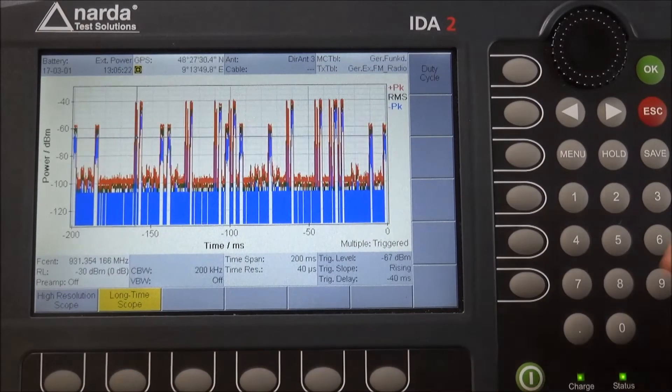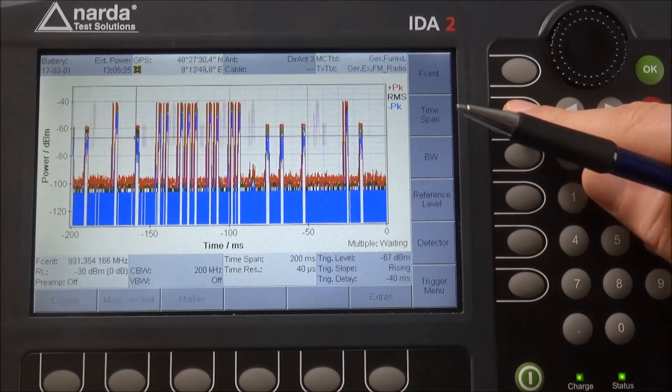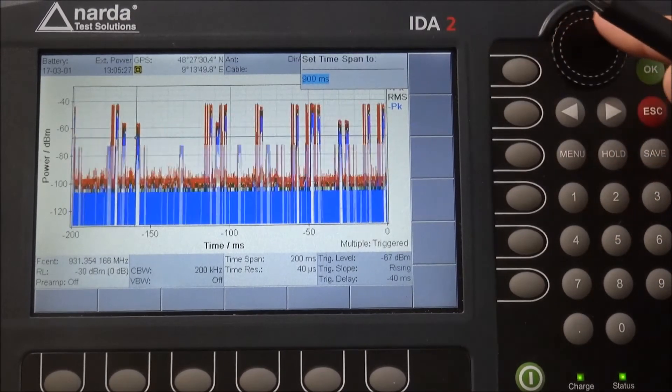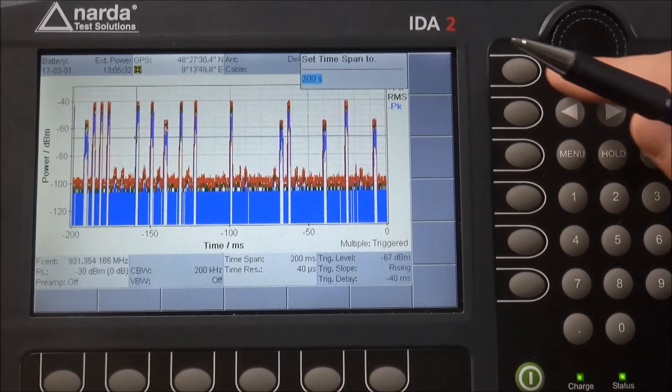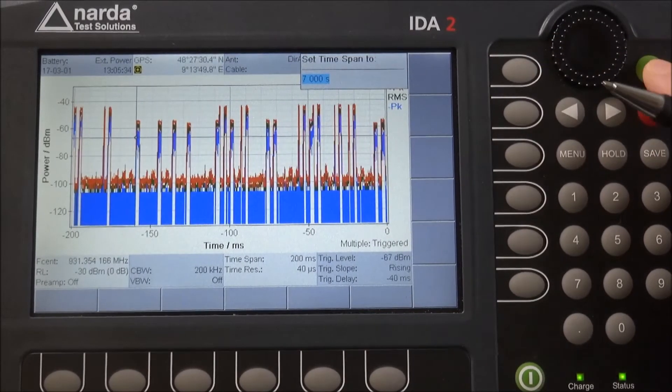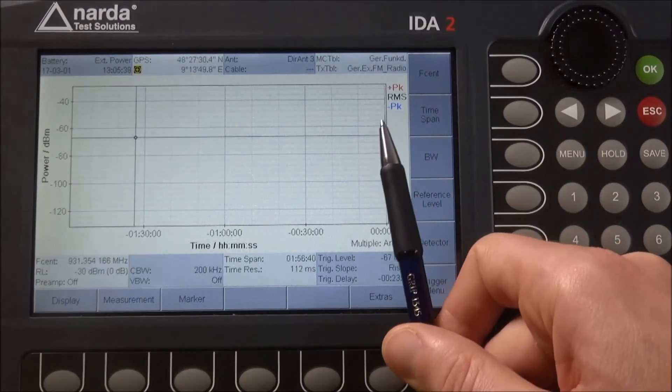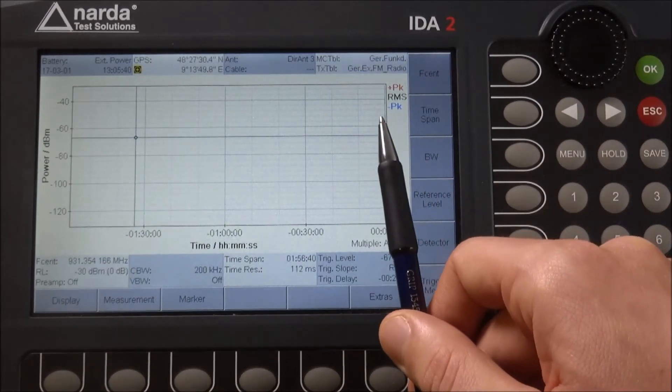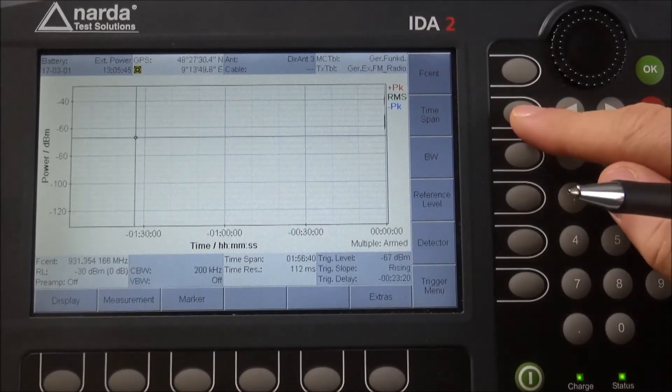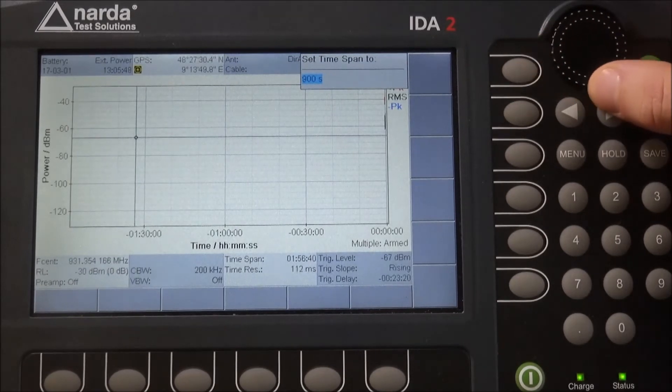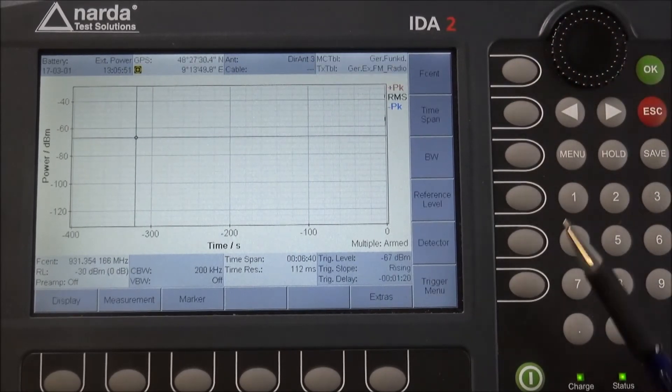When you click on time span now, you don't have any limitations up to almost a day. By that you will see the scope trace moving to the side very slowly. Let's take a smaller one and we will slowly see the traces with different detectors building up.